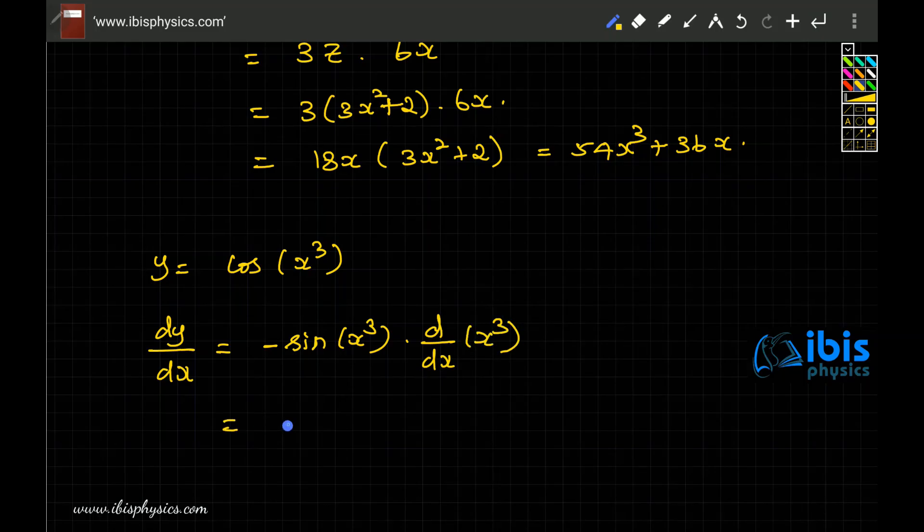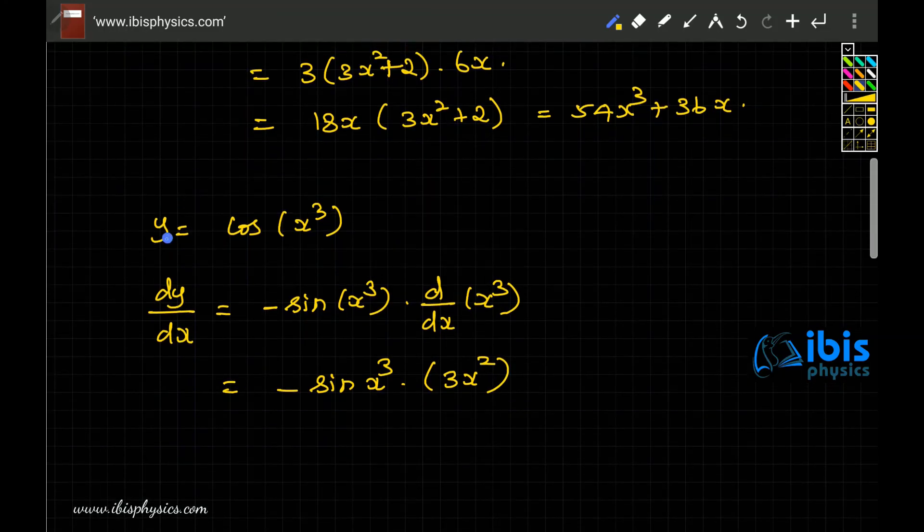So d/dx of x³ is 3x². So if y equals cos of x³, dy/dx is actually equal to -3x² sin(x³).